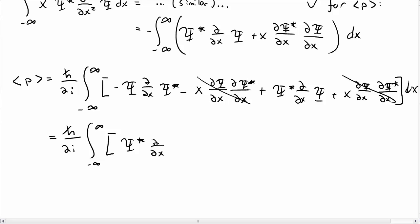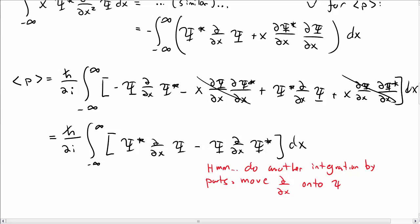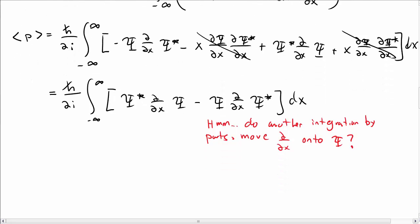This simplifies down to something that looks a little bit better. Psi star x derivative of psi minus psi x derivative of psi star dx. But this still doesn't look like a simplified form. Maybe we could do another integration by parts. Again, that's surely the first thing you thought of. Let's move the d by dx on the second term onto psi to make it look like the first term.